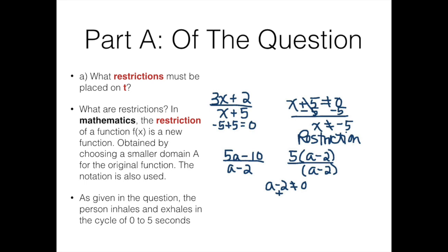As given in the question, the person inhales and exhales the cycle of 0 to 5 seconds. This gives us a hint to where our first restriction will be placed. To the right are examples of restrictions. Essentially, restrictions are numbers in equations that do not make sense in the equation and are possibly numbers that could not relate to the context of the question and are not possible.